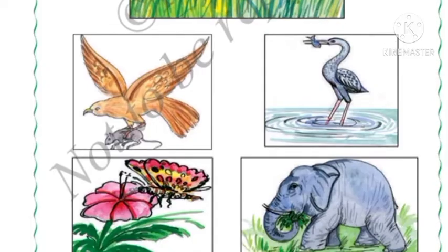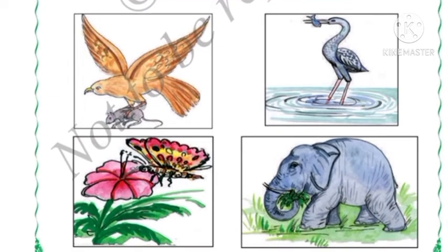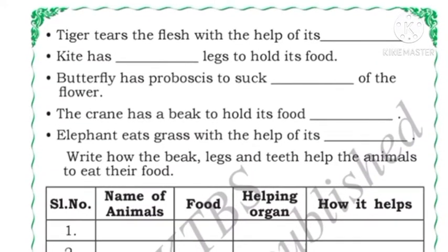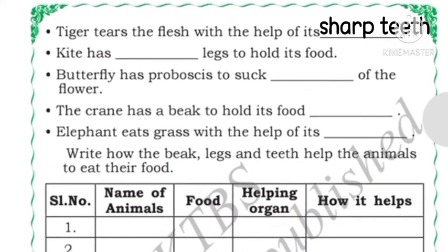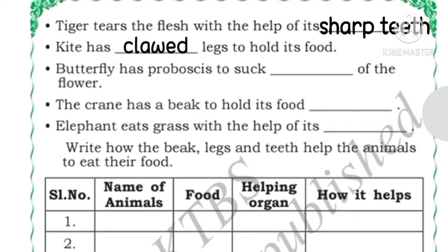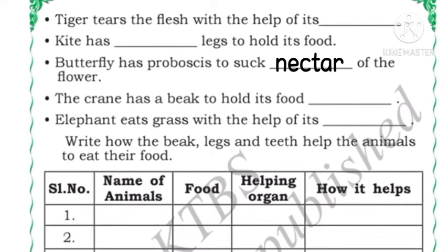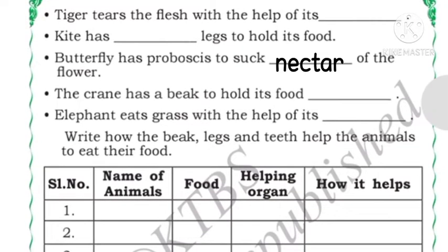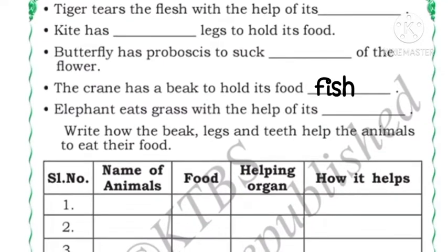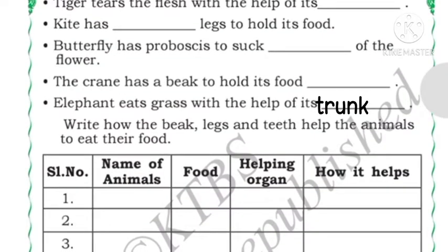The elephant is eating grass with the help of its trunk. You can see different animals eating different food with the help of different organs. Fill in the blanks: tiger tears food with the help of its sharp teeth; kite has clawed legs to hold its food; butterfly has proboscis to suck the nectar; crane has a beak to hold fish; elephant eats grass with the help of its trunk.